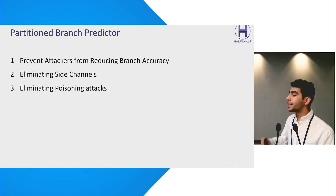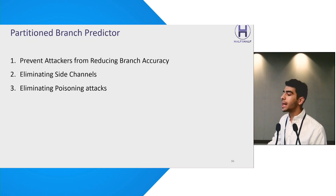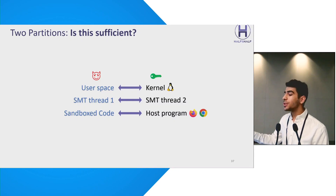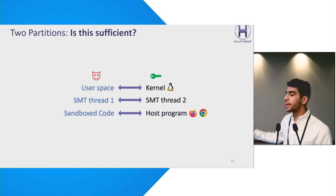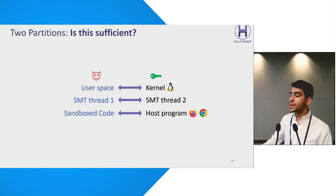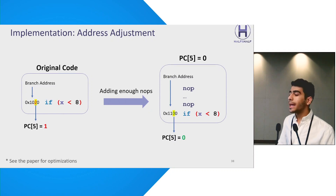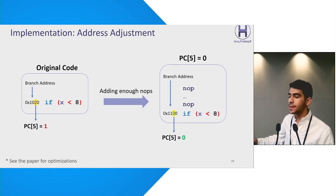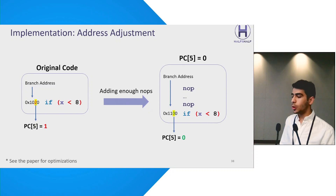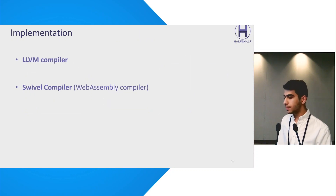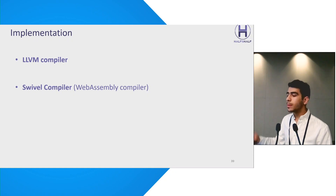Partitioning the branch predictor helps prevent attackers from reducing branch accuracy and eliminates side-channel and poisoning attacks. Partitioning into two halves is especially beneficial in scenarios involving two distrusting parties, such as user space versus kernel code, SMT threads, or sandbox code versus the host program. We implement the partitioning mechanism by adjusting the addresses of all conditional branches within a program by inserting enough NOP instructions to achieve the desired PC bit 5 value. We have devised several optimizations to minimize the overhead of adding these NOP instructions. We incorporate our address adjustment techniques into two compilers: the LLVM compiler and the SWIVEL compiler, which especially targets WebAssembly to mitigate Spectre and memory safety attacks.